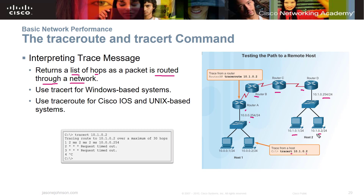Over a maximum of 30 hops, you may get a reply back and then a request timed out, and you can then use ping to figure out why it timed out. Tracert is used for Windows-based systems, and traceroute is for Cisco IOS and Unix-based systems. So tracert is on Windows; traceroute is on Cisco and Unix/Linux.